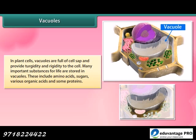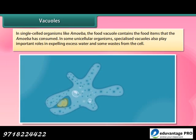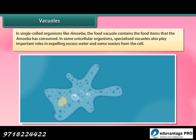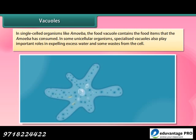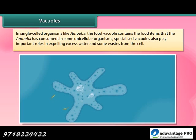Substances stored in vacuoles include amino acids, sugars, various organic acids and some proteins. In single-celled organisms like amoeba, the food vacuole contains the food items that the amoeba has consumed. In some unicellular organisms, specialised vacuoles also play important roles in expelling excess water and some wastes from the cell.